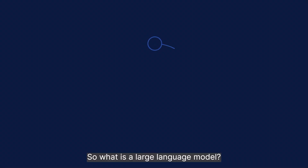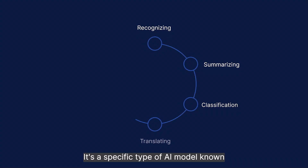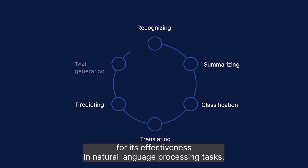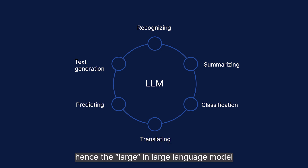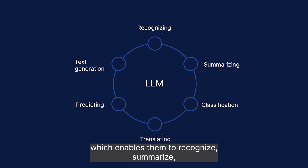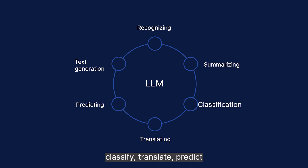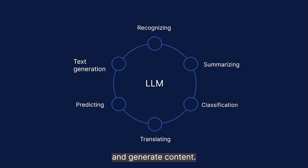So, what is a large language model? It's a specific type of AI model known for its effectiveness in natural language processing tasks. LLMs are trained on massive datasets — hence the name 'large language model' — which enables them to recognize, summarize, classify, translate, predict, and generate content.